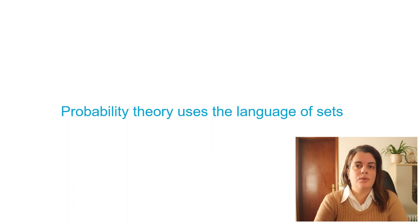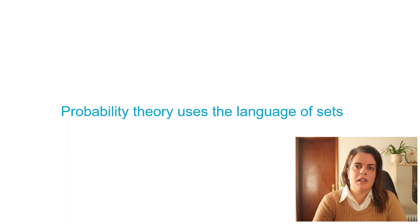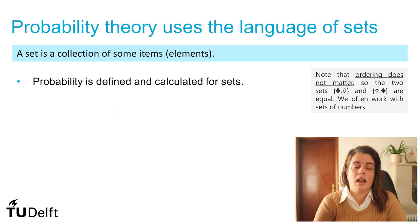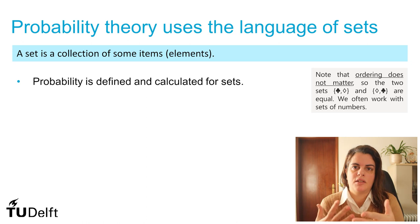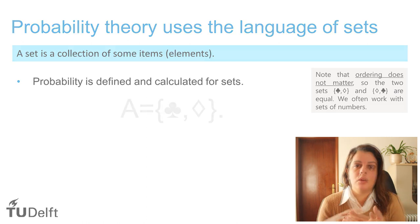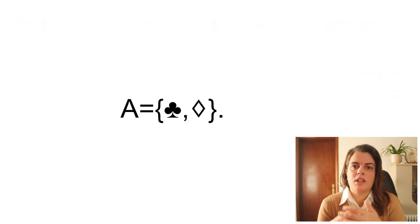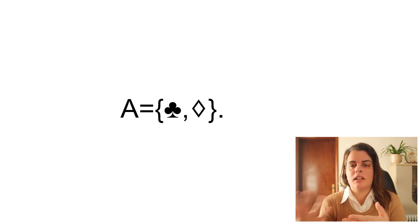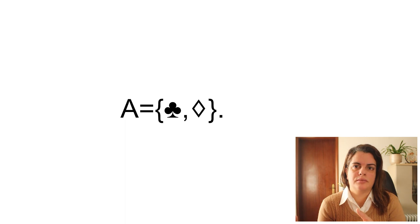Now that we have provided an intuition for probability and randomness, let's talk about the theory of sets. The theory of sets is the language of probability and it's very important to understand the mathematical foundation for probability. A set is a collection of some items, and probability is defined and calculated for sets — always for sets. In a set, it doesn't matter how the elements are ordered, but which elements are within the collection. We typically define a set in mathematics using curly brackets. For example, we can define the set A as containing clubs and diamonds.